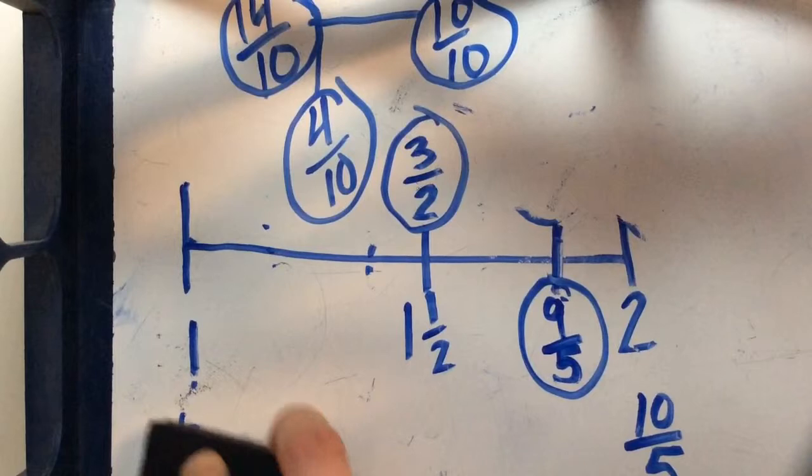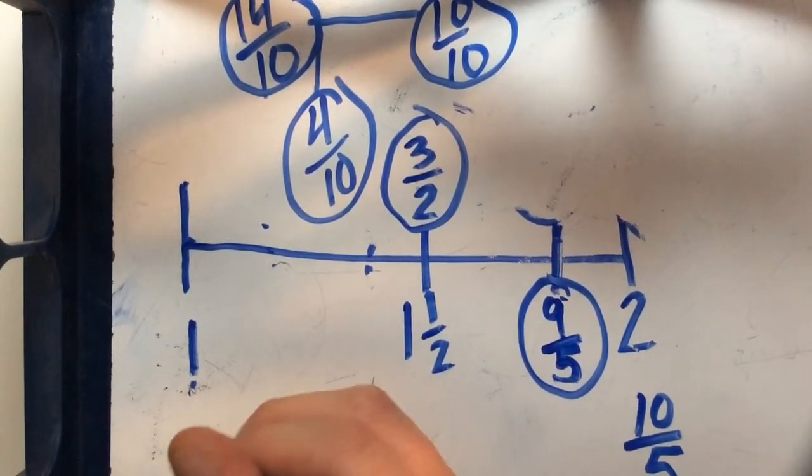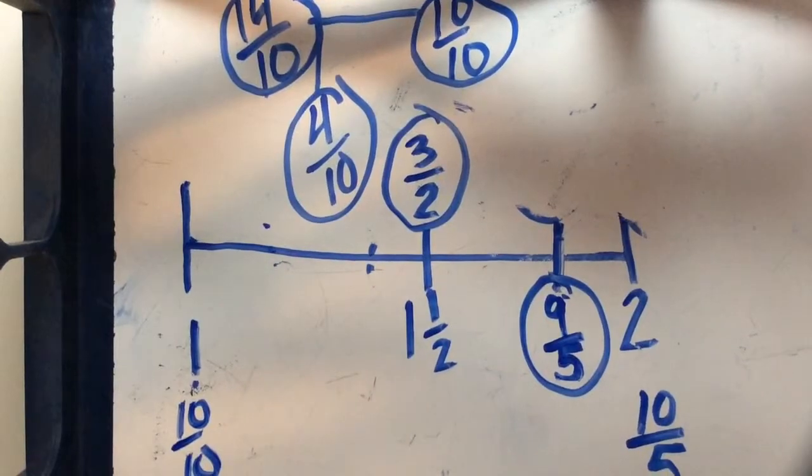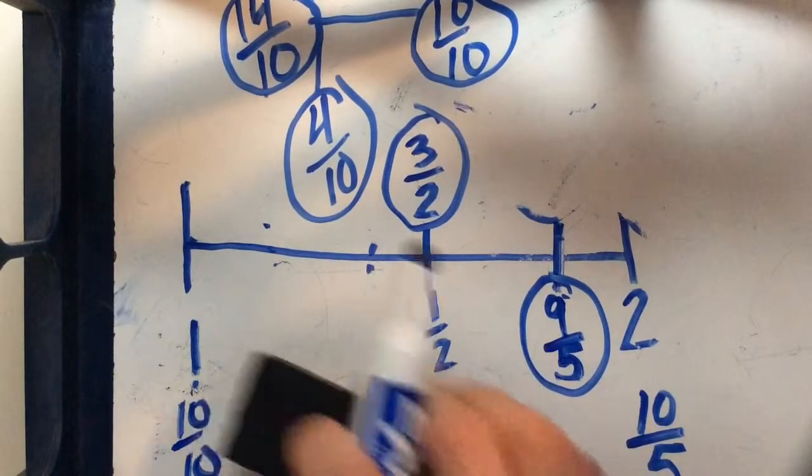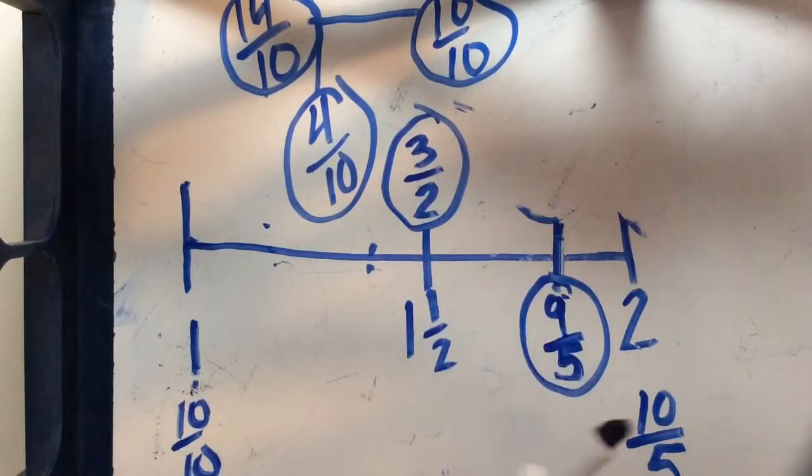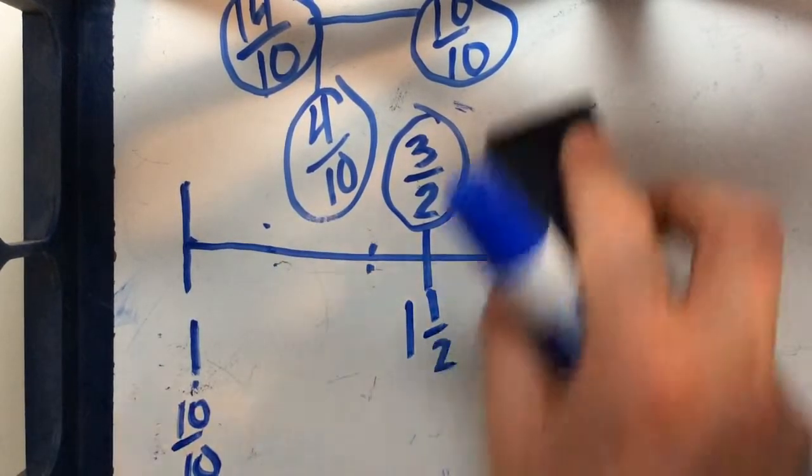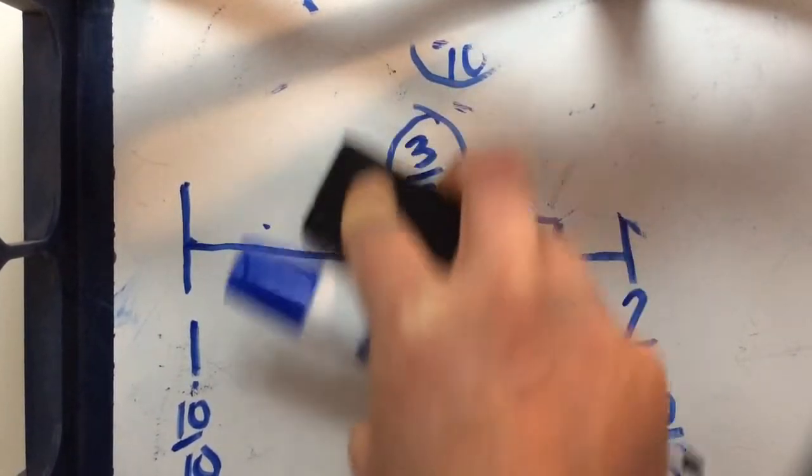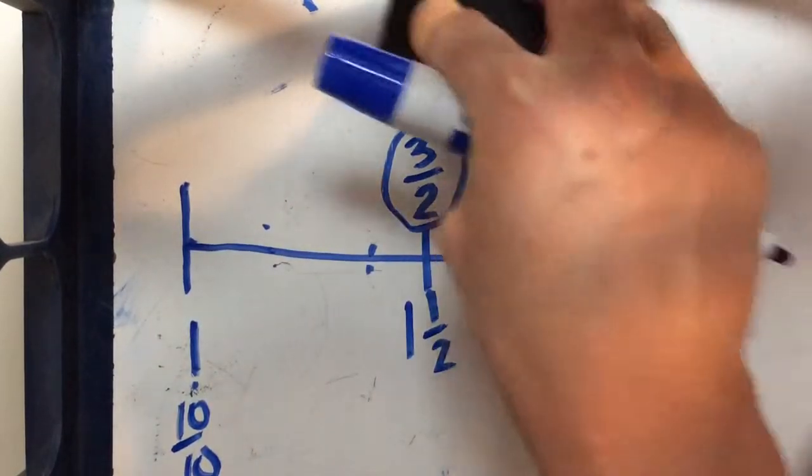So we're done with our fifths. Let's think about our 1 as 10 tenths and we know thanks to our number bond that we need to count up 4 more tenths. So we need 4 more tenths to get us to 14 tenths.